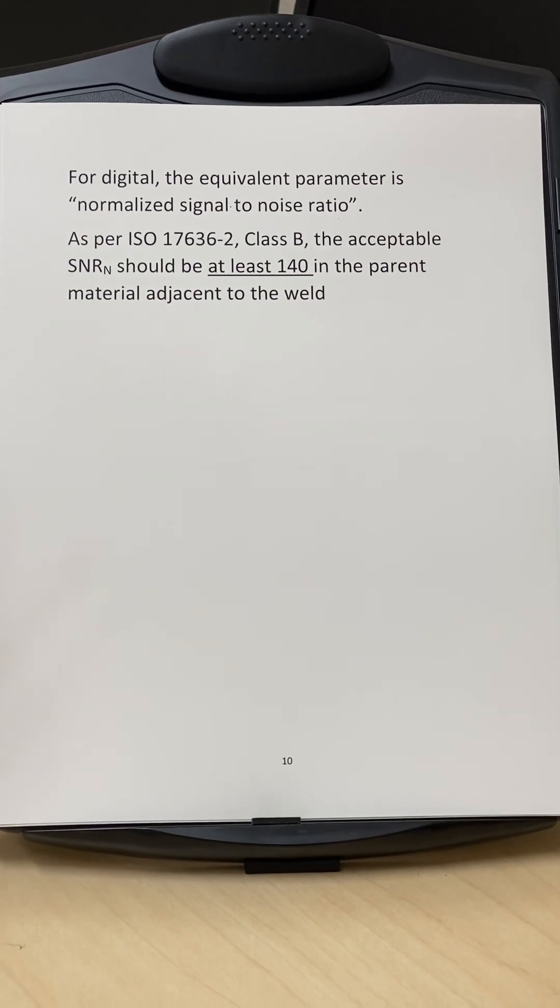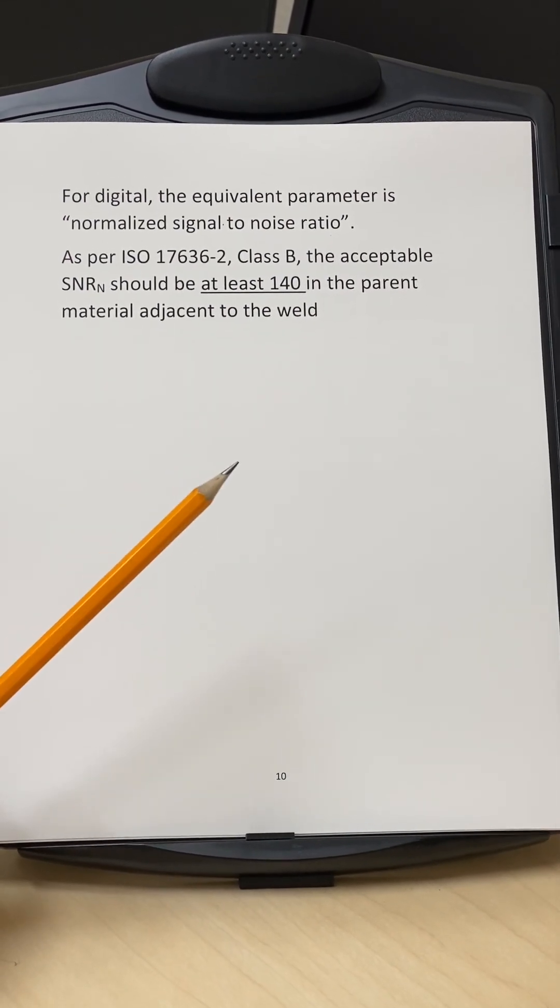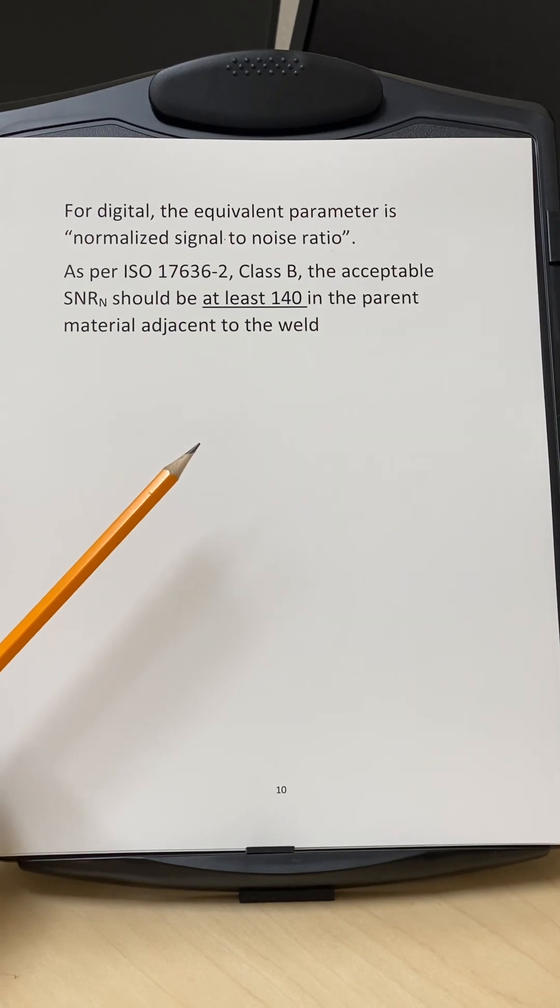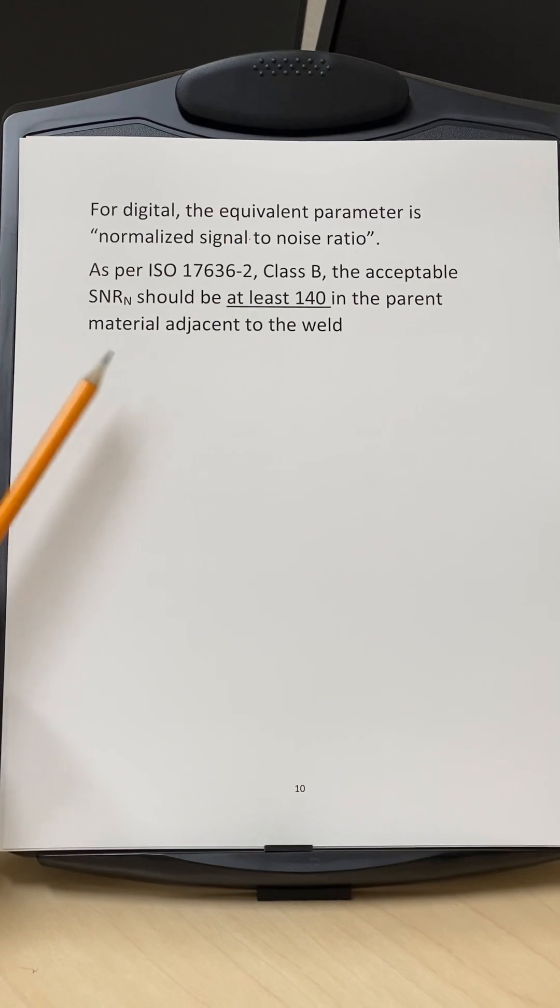And as per the ISOs, the signal to noise ratio should be measured on the parent metal. And this should be more than 140. So this is the normalized signal to noise ratio. And this is also given in the ISO class standard.